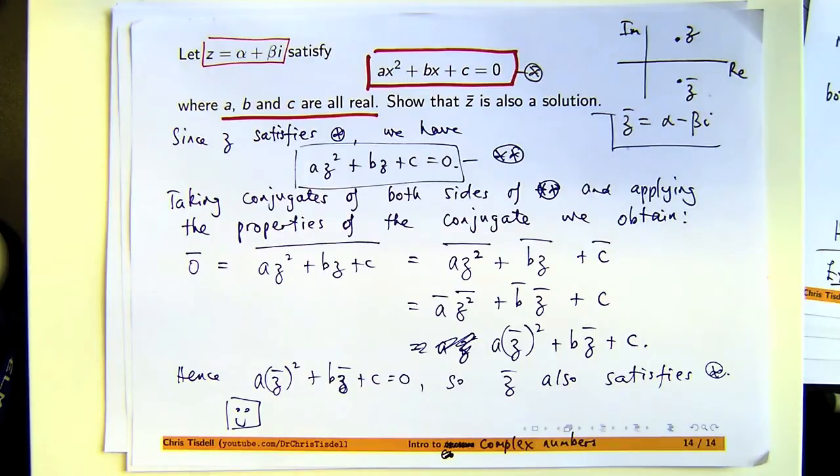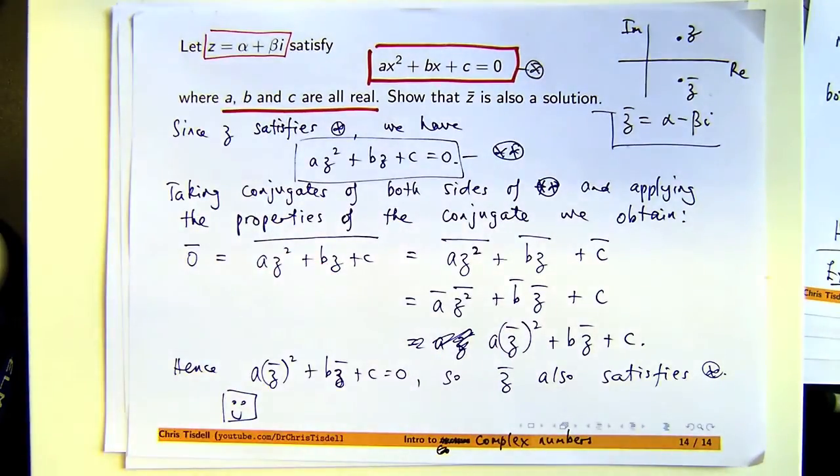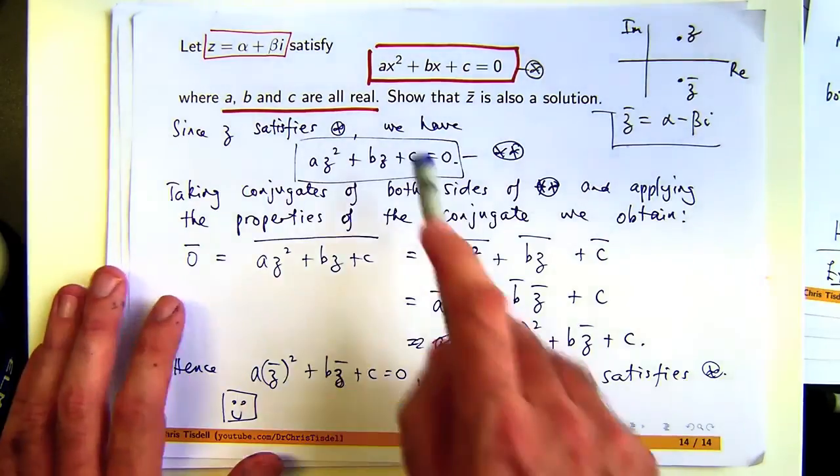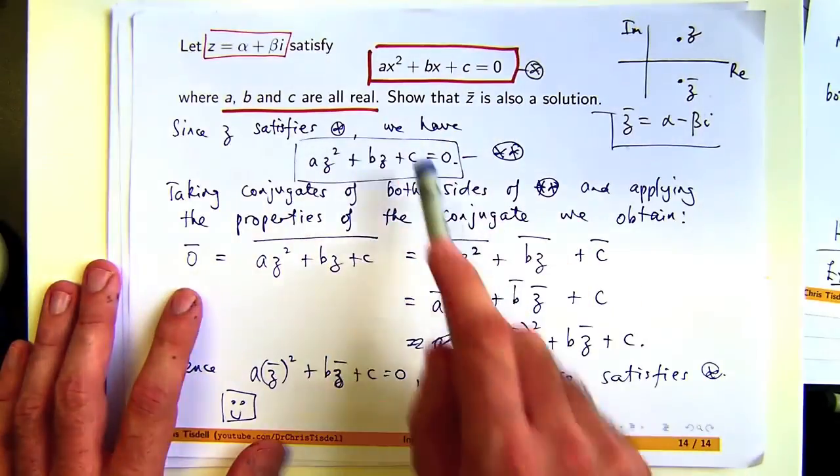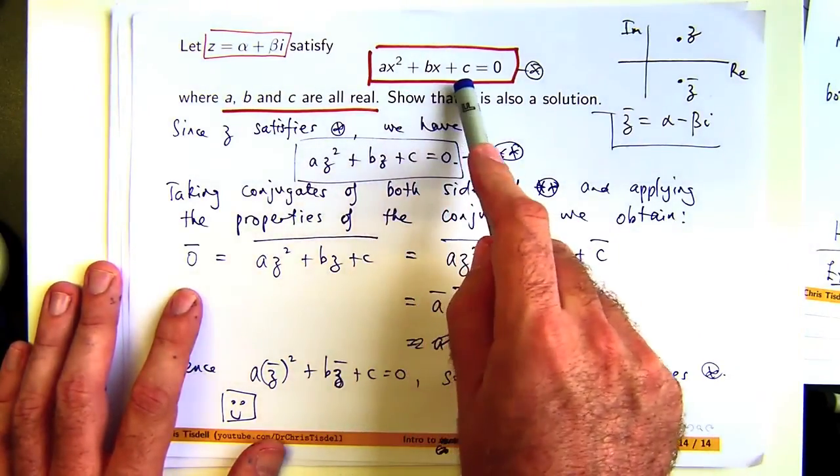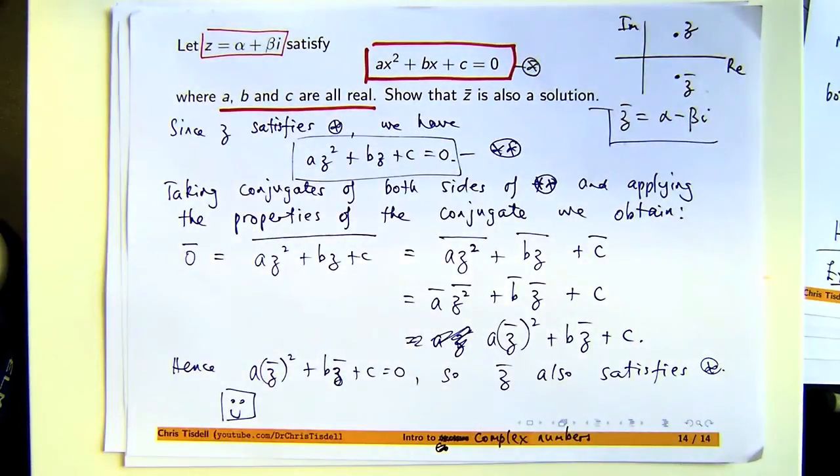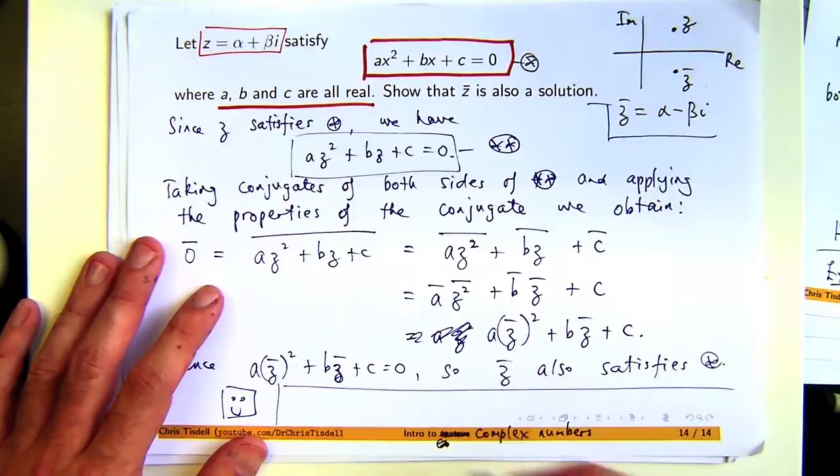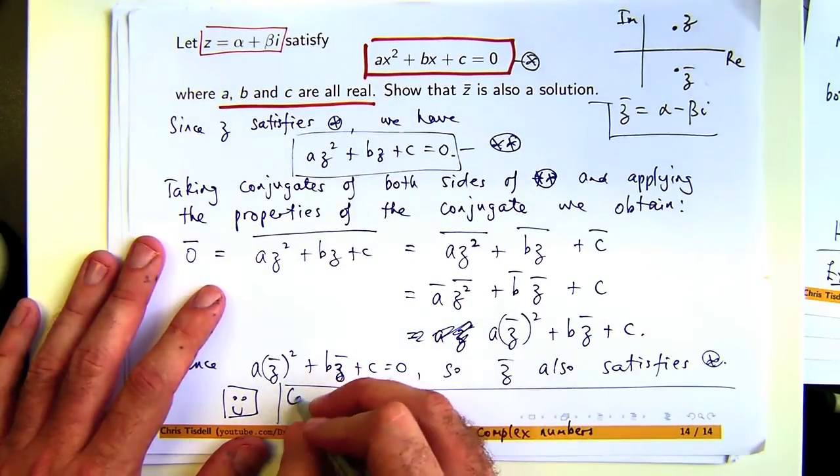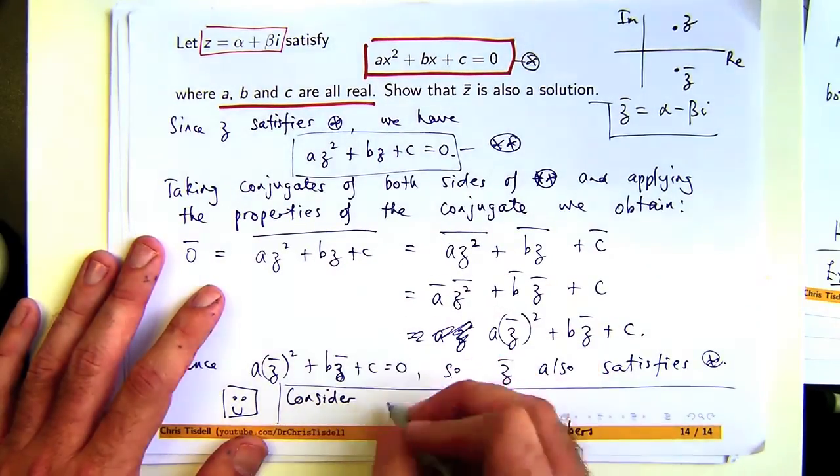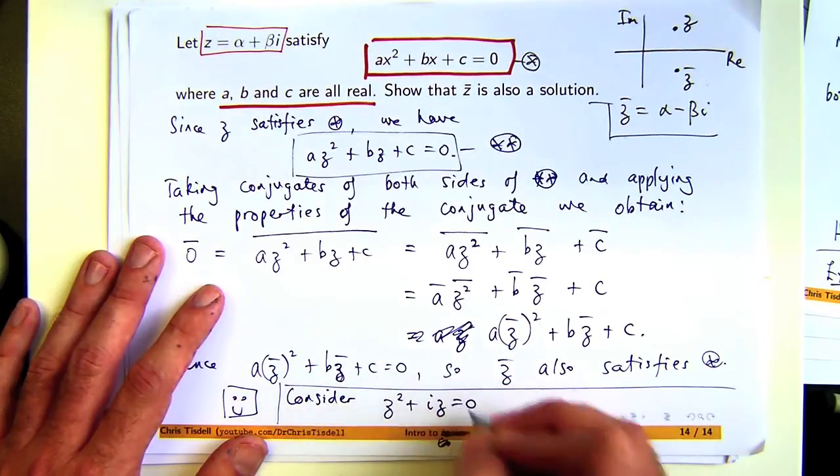If the coefficients of that cubic or that quartic equation are all real, and you have one solution, is the conjugate still a solution? And the answer is yes, it is. There's another way to generalize this. And let's just keep it in the quadratic equation case. What happens if a, b, or c were complex numbers? And you have one solution. Is the conjugate still a solution to that problem? Not necessarily. Let me just write something down here.